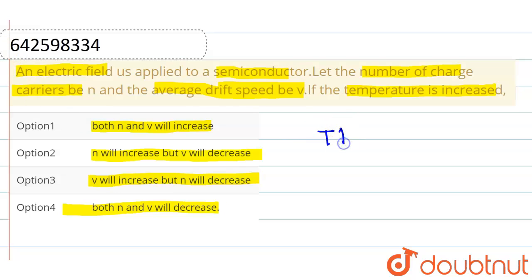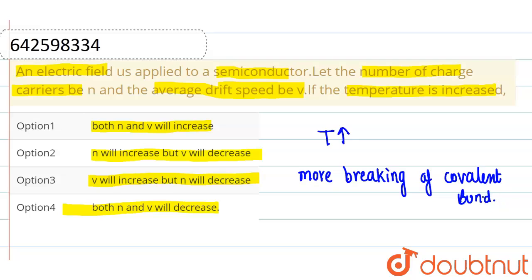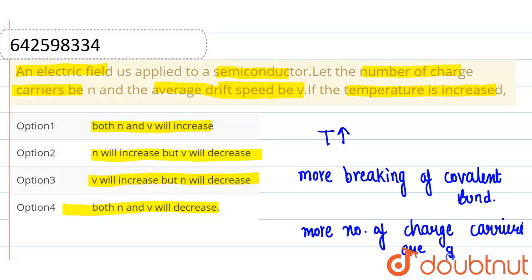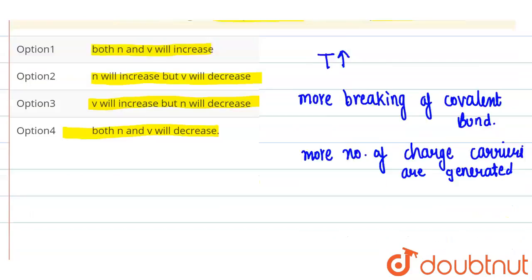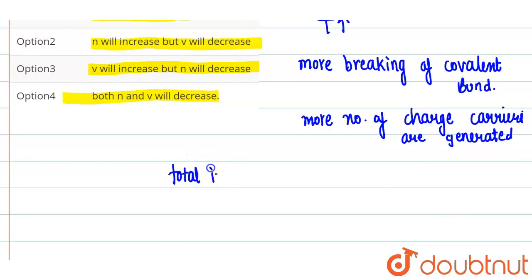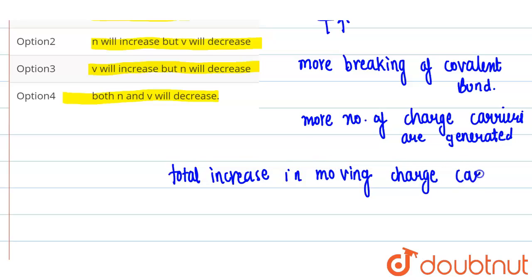If the temperature is increased, there will be more breaking of covalent bonds. So if more covalent bonds break, then more number of charge carriers are generated. This leads to a total increase in moving charge carriers.